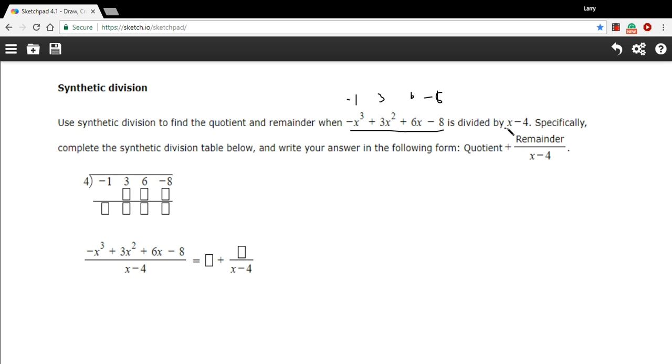And then what we're dividing by, you take the number here, so x minus 4, and you just change the sign so we've got a positive 4 out here.